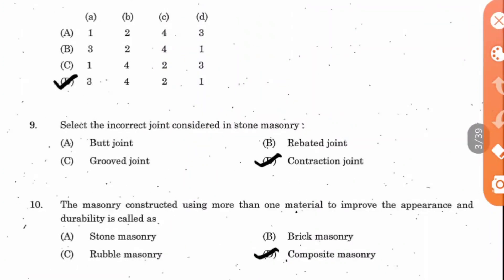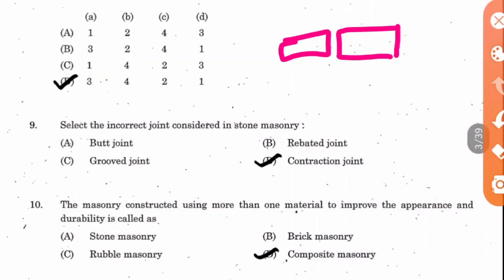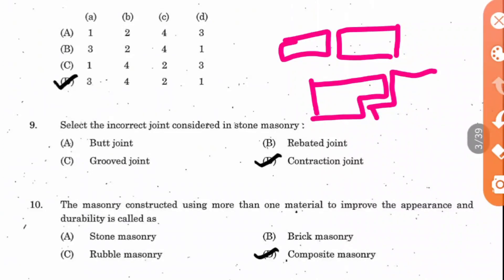Question 9: Select the incorrect joint considered in stone masonry. Stone masonry uses certain joints like the contraction joint. The butt joint is used in steel structures, not stone masonry. A rebated joint is where a stone breaks in a step-like fashion and the joint is applied there — it can be horizontal or inclined. A grooved joint is like a butt joint but with an extra groove opening where the stone is fixed. So butt joint is the incorrect one for stone masonry.